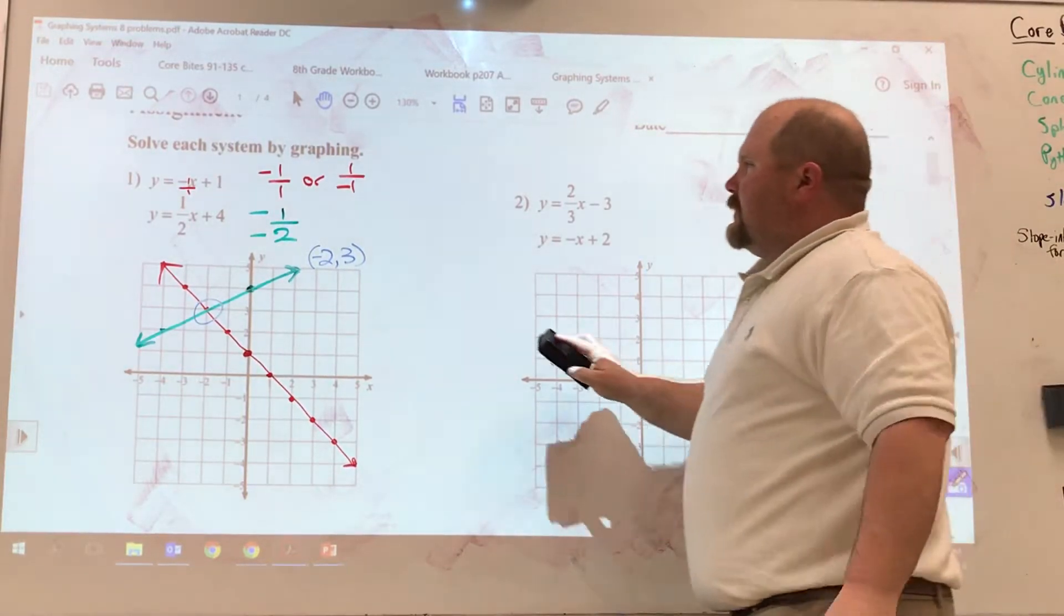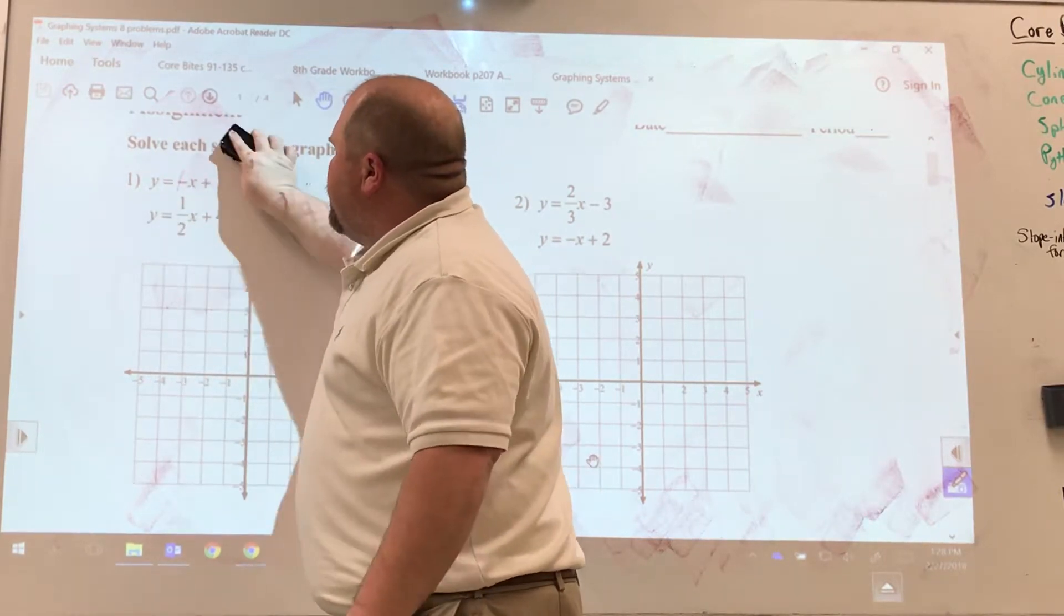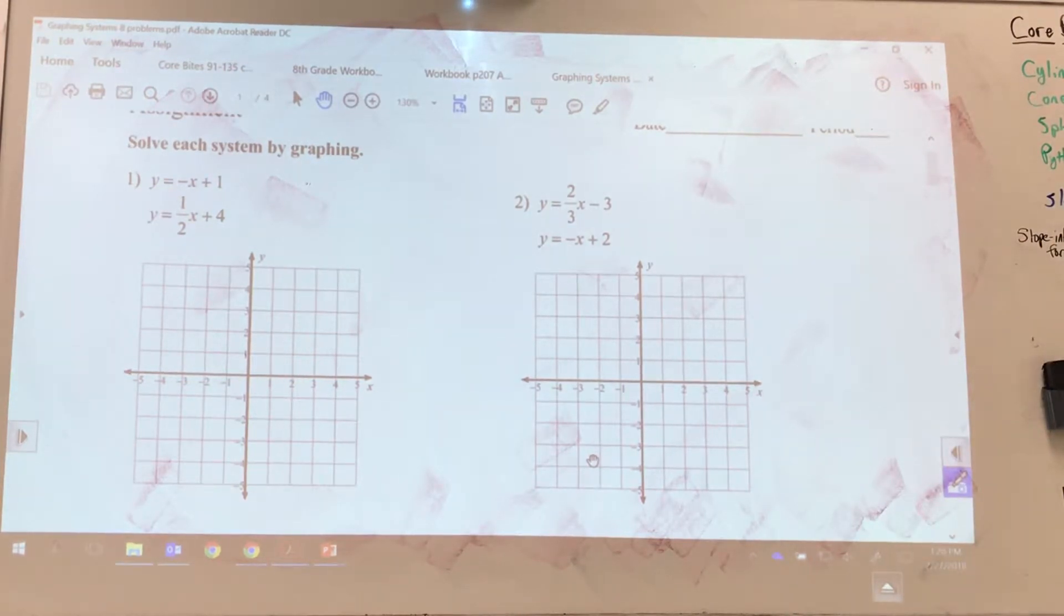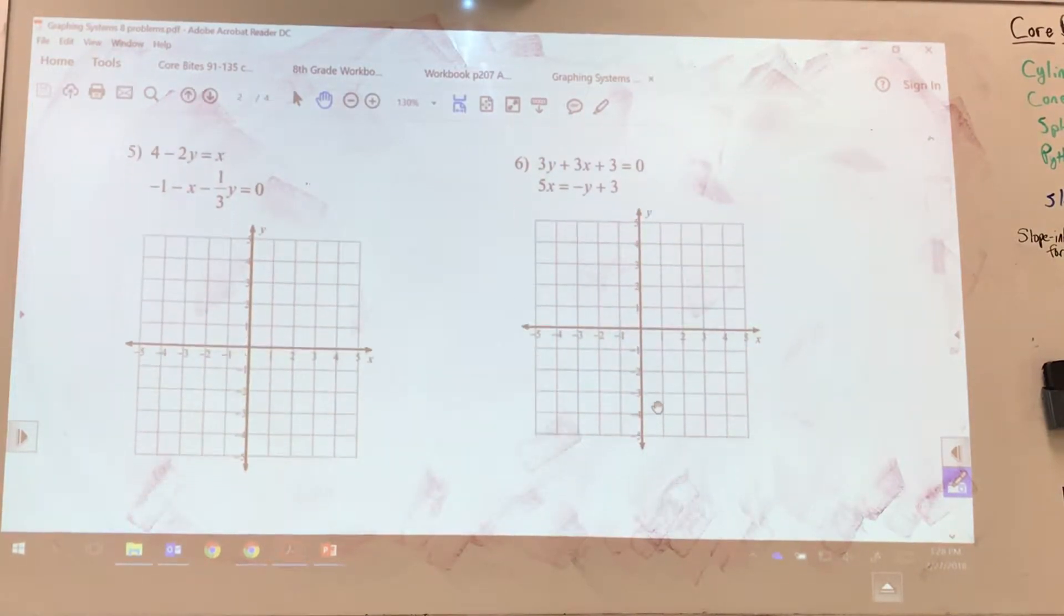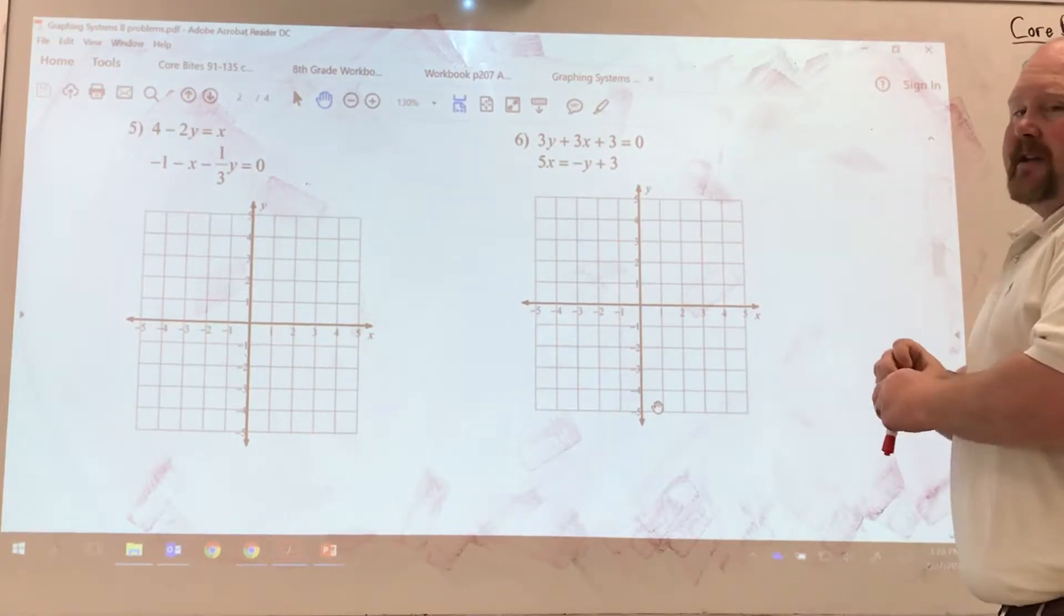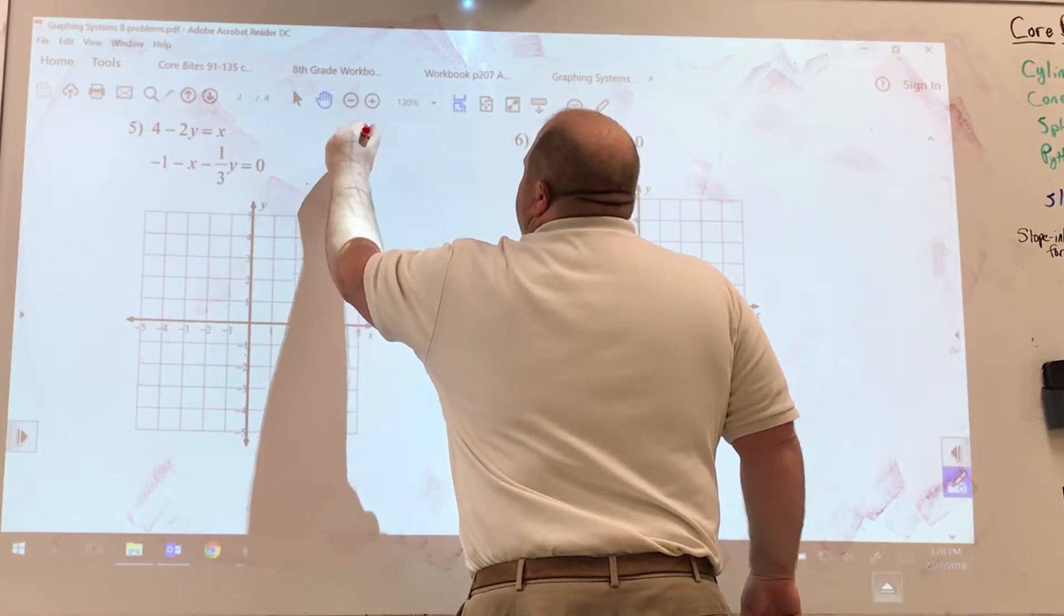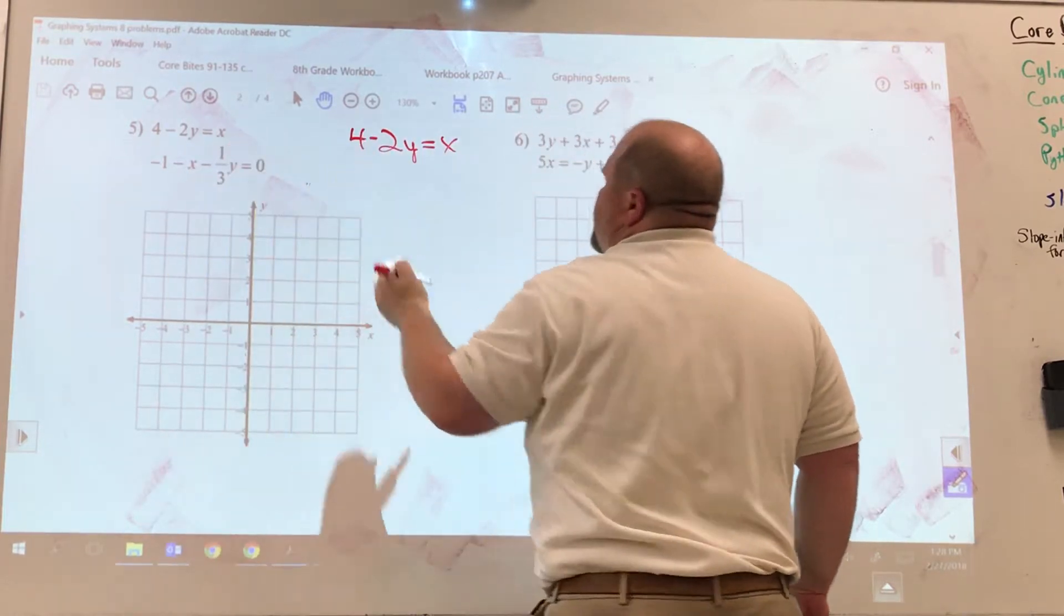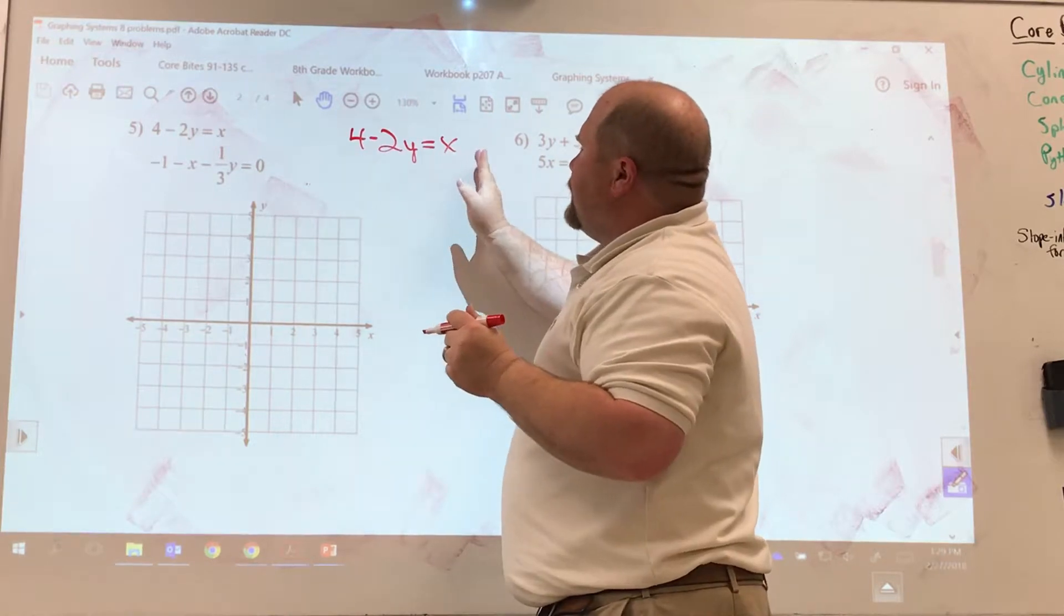All right, we're going to erase this, and we're going to do problem number five from the back. It's actually probably the hardest problem on this handout. All right, so problem number five. If you'll notice, problem number five is not in slope-intercept form. That means we're going to have to rearrange these equations to get them into slope-intercept form. So right now, all I'm doing is just rewriting this equation over here. Well, we notice this is the b. This is the y-intercept. It should be on the right-hand side of the equal.